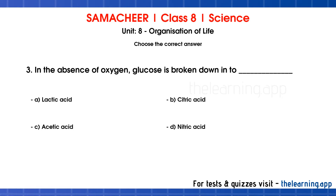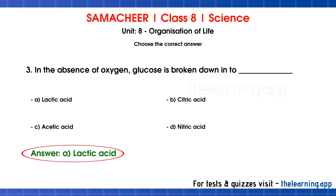Third question: In the absence of oxygen, glucose is broken down into dash. The options are A. Lactic acid, B. Citric acid, C. Acetic acid, D. Nitric acid. The correct answer is option A, lactic acid. The absence of oxygen means anaerobic respiration. In aerobic respiration, when we take in oxygen, we use oxidation of food substances and release carbon dioxide.